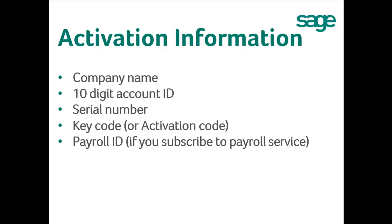Your activation information includes your company name, 10-digit account ID, serial number, key code, or activation code. You will also get your payroll ID if you have the payroll option with your Sage Business Care Plan.